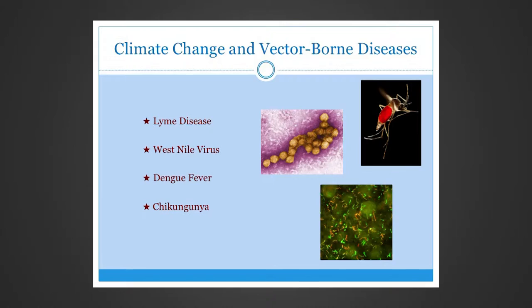Today I'm going to focus on just four diseases: Lyme disease, West Nile virus, dengue fever, and chikungunya. The images shown include the West Nile virus in purple and yellow, and a stain of the Borrelia burgdorferi bacteria that causes Lyme disease in green and yellow.